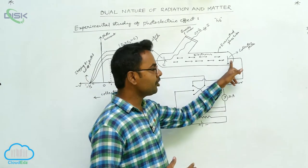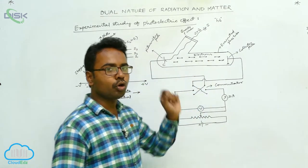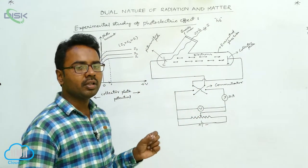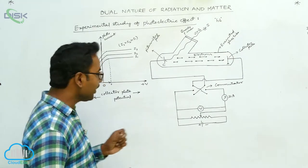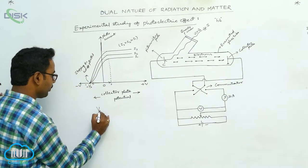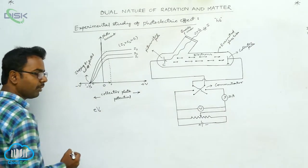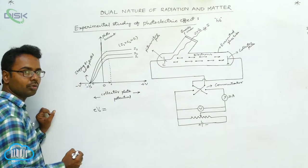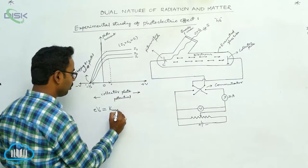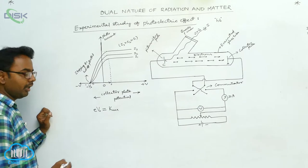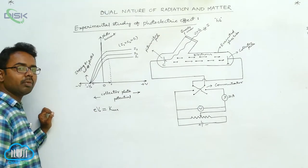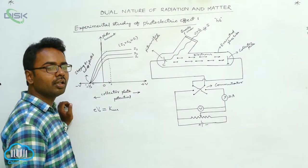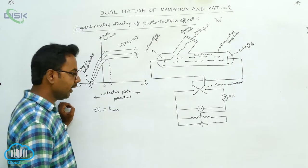The potential given to the collector plate stops all electrons, meaning it is able to stop the maximum energetic electron. At stopping potential V₀, the work done by the stopping potential V₀ is equal to the maximum kinetic energy of electrons. That is, eV₀ is equal to the maximum kinetic energy of the electrons.